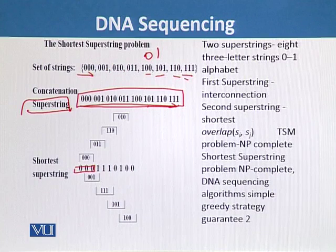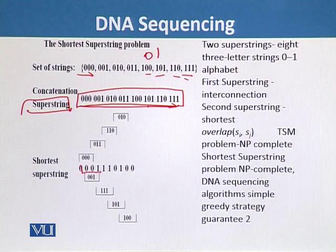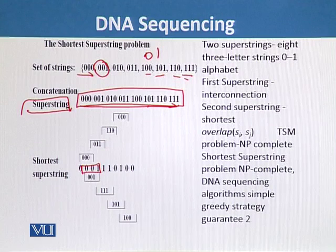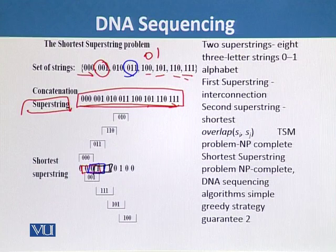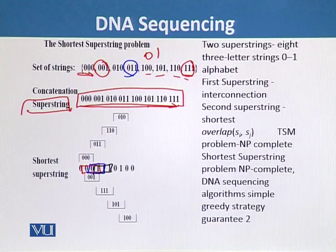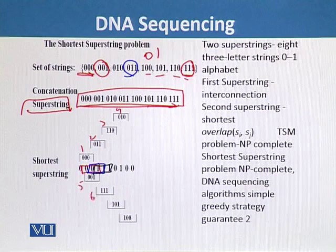Then we can shift by one just like a sliding window, and we will use the second set of the three-letter code, which is zero-zero-one. We know that zero-zero-one appears here. Then we slide another one position and start from zero-one-one, and we know that we have zero-one-one here. We again slide one more and start from one-one-one, and we know that we have this three-letter code one-one-one in this position. In this way we will use all eight three-letter combinations: one, two, three, four, five, six, seven, eight.